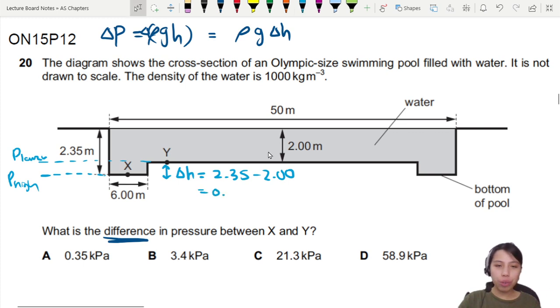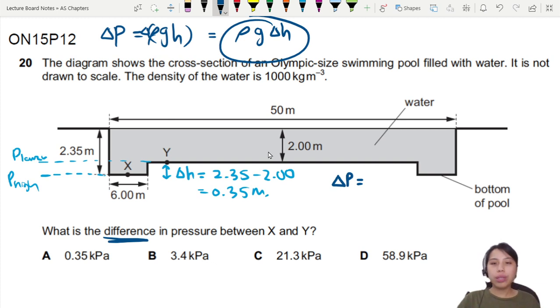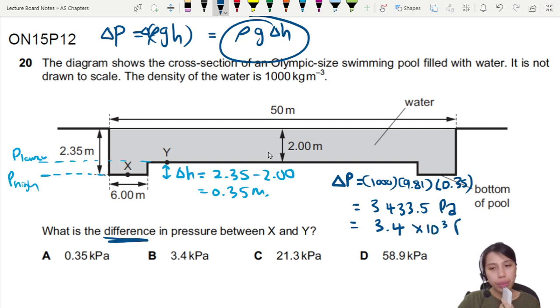This one is a difference of 0.35. So in the end when you want to find the delta P, we're going to use rho g delta h. So the density is 1000, g is 9.81, change in height is 0.35. And with that we should get 3433.5 pascals, which we can round off and write to 3.4 in standard form. So 3.4 times 10 to the 3 pascals.